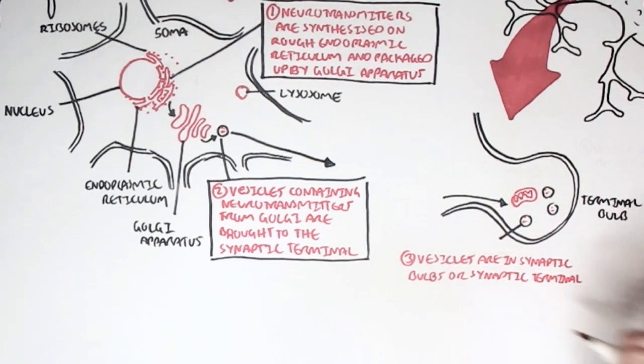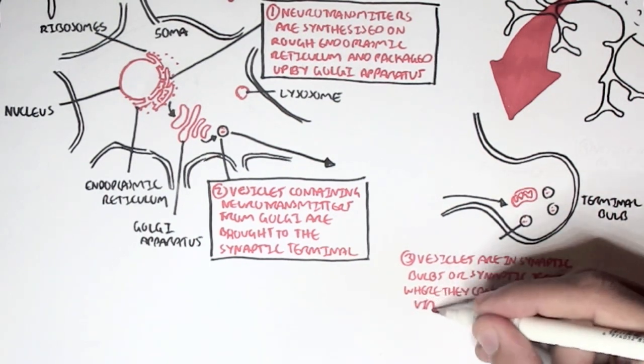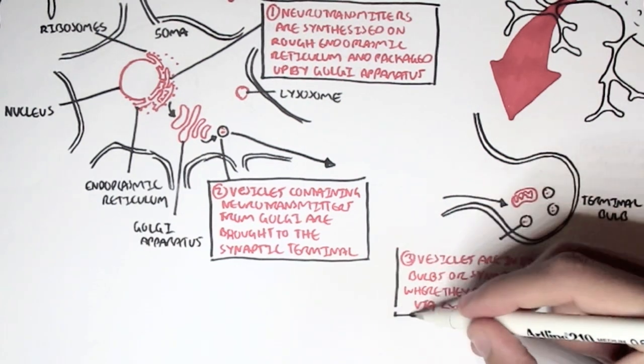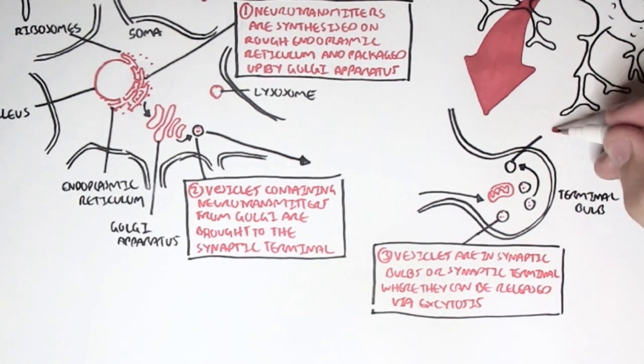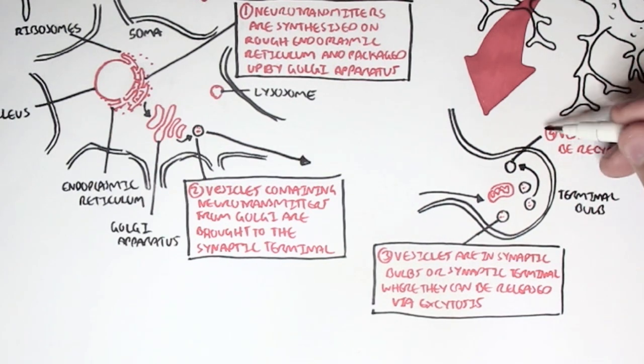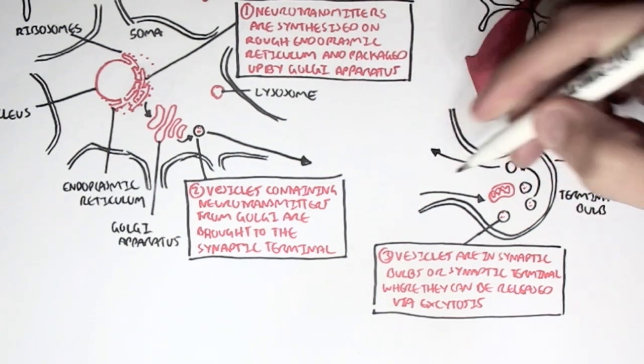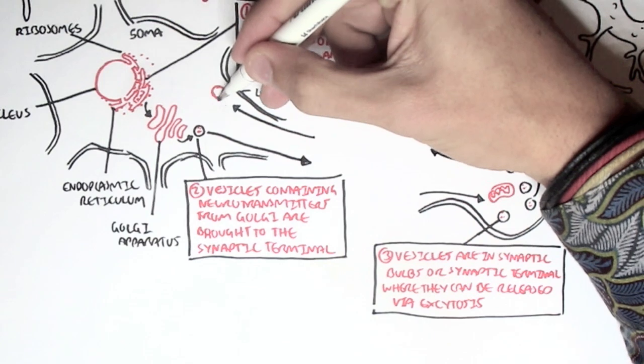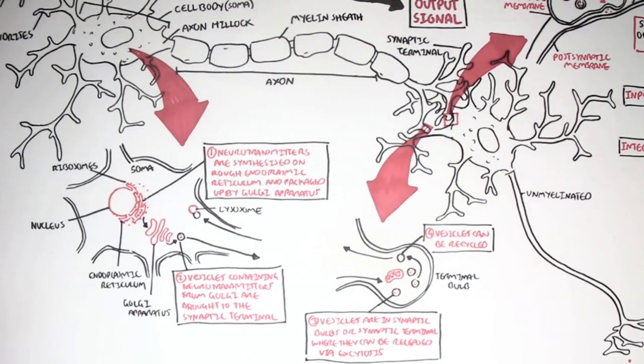The vesicles are in the synaptic bulb where they can be released via exocytosis to the synaptic cleft when an action potential arrives. The neurotransmitters can be reabsorbed from the synaptic cleft and form vesicles, and then these vesicles can be recycled. They can travel back to the soma of the neuron where they are fused with lysosomes. The lysosomes will digest these vesicles for recycling.